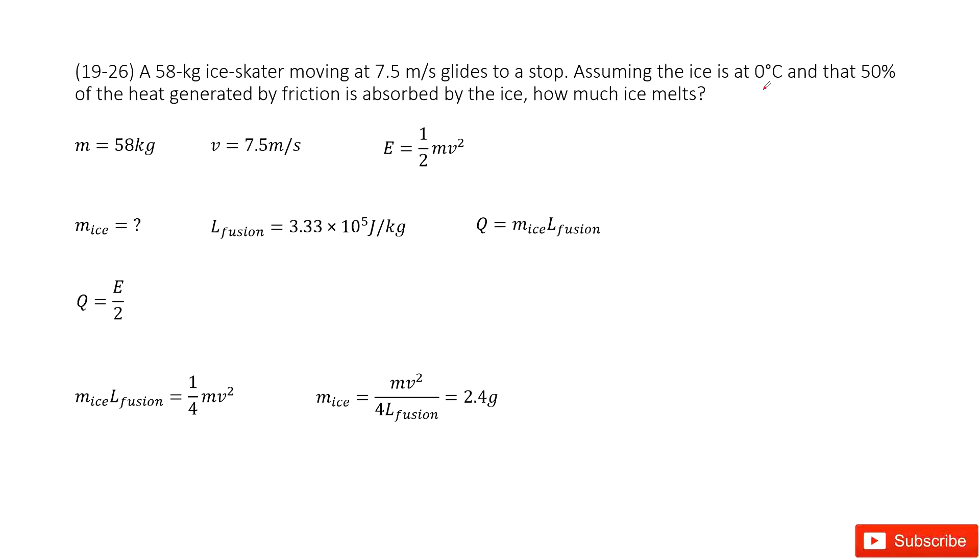It looks difficult but it's not. We can see this sentence: half of the heat generated by friction is absorbed by ice. Now what is the heat generated by friction? This comes from energy conservation. The initial kinetic energy is finally transferred to the heat generated by friction.